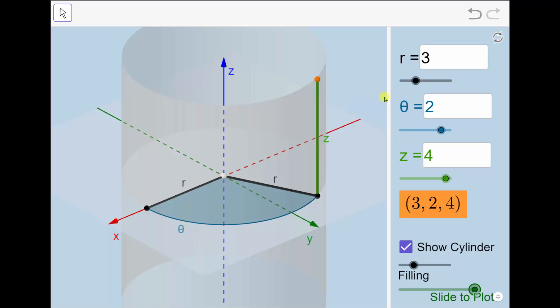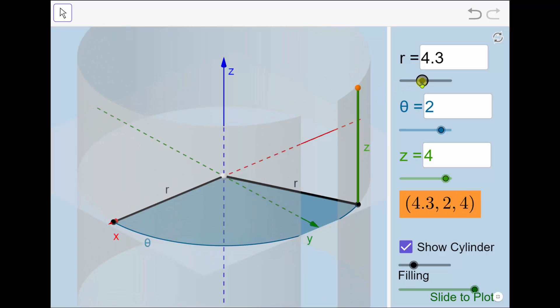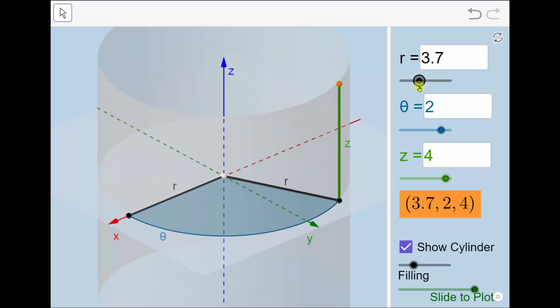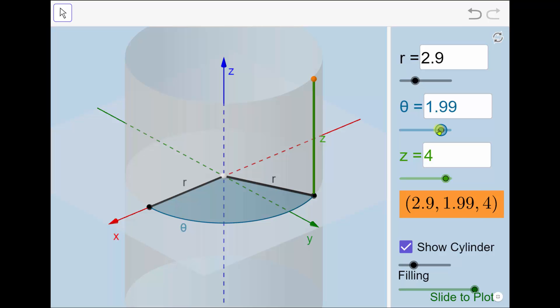Again, r is the directed distance from the origin. If we change r, we can see how it affects the point and notice how it changes the cylinder. If we change theta, it changes the angle of rotation from the positive x-axis. If we change z, we change the distance up or down from the point r comma theta in the xy-plane.